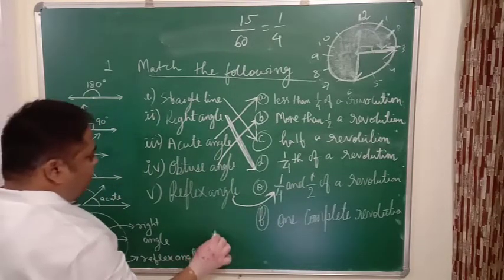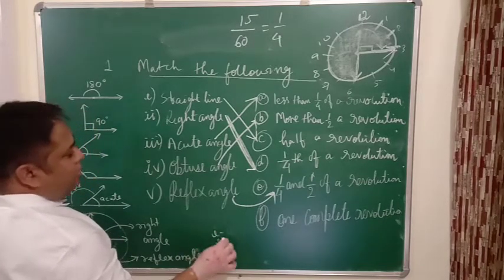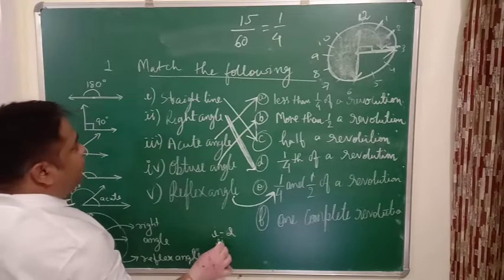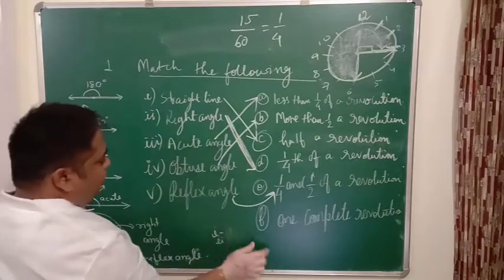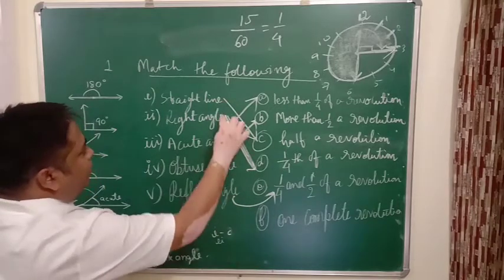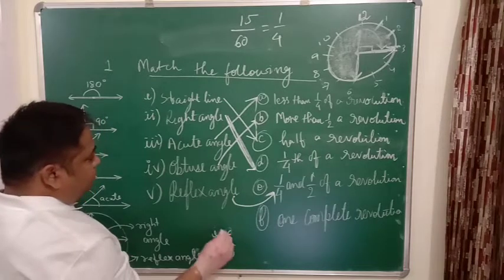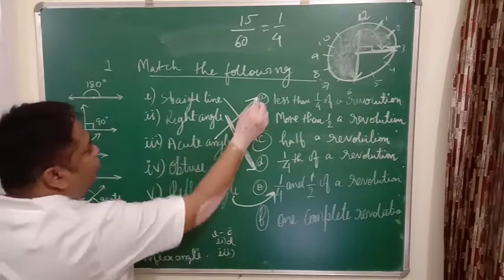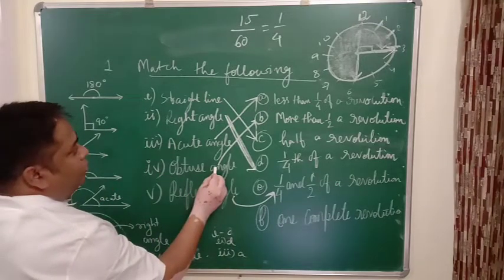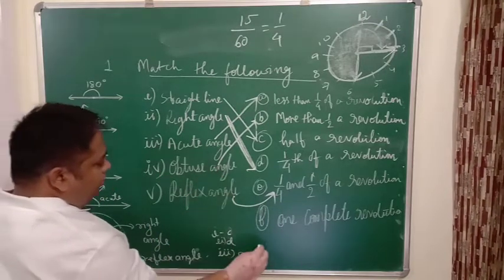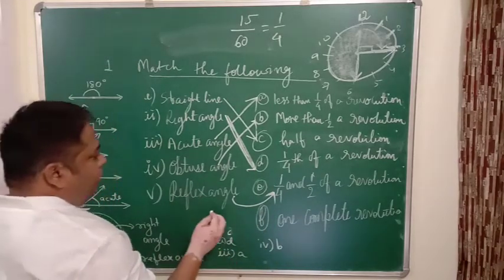So for first you can write, sorry, for first you will write C, then second you will write D, then third will be equal to A, and fourth will be B, and fifth will be E.